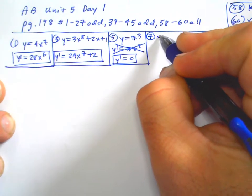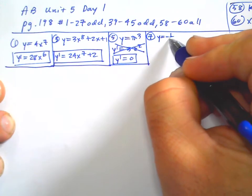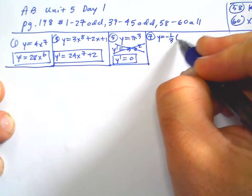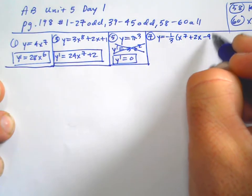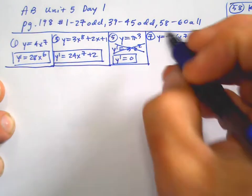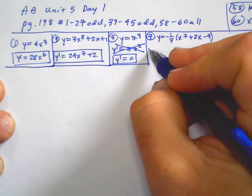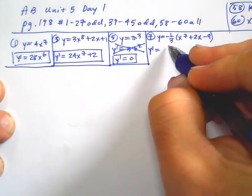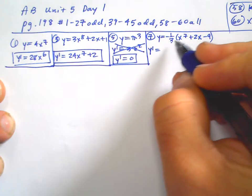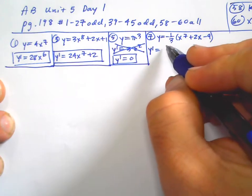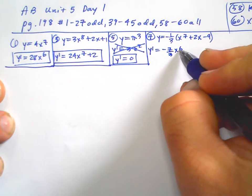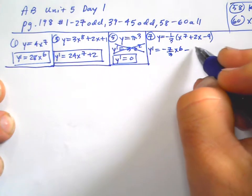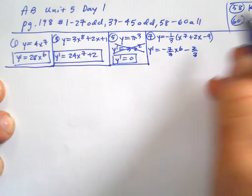Number seven: y equals negative one third times x to the seventh plus 2x minus 9. We could distribute as we do it — you can bring the negative one third through for the derivative. So that gives negative seven thirds x to the sixth minus two thirds. That works.